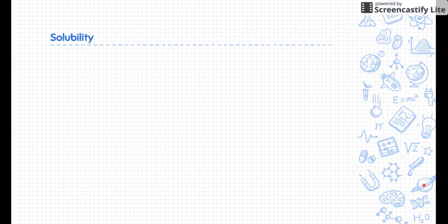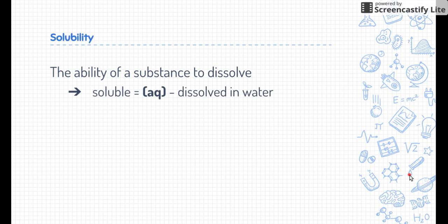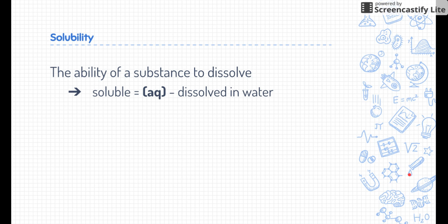So solubility is what we're talking about today. It's just the ability of a substance to dissolve, and we want to know whether a substance can dissolve or not. If a substance is soluble, we say that it is able to be dissolved in water, and we usually designate that symbol as aqueous (aq), because aqueous means dissolved in water. That's the phase symbol we would use next to our chemical formula.